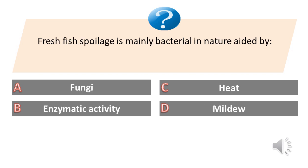Fresh fish spoilage is mainly bacterial in nature aided by: A. Fungi. B. Enzymatic activity. C. Heat. D. Mildew. Answer is B. Enzymatic activity.